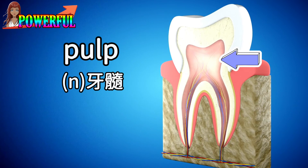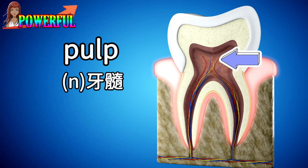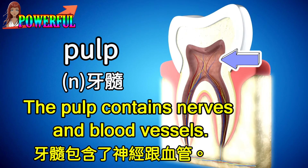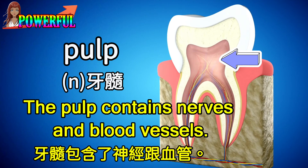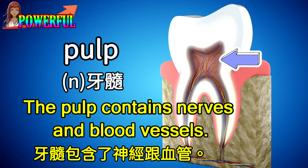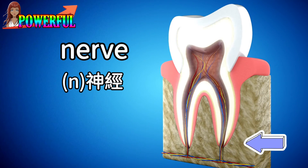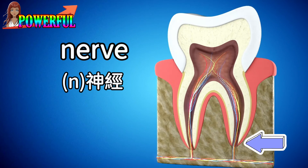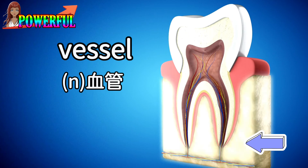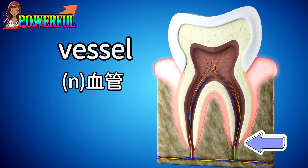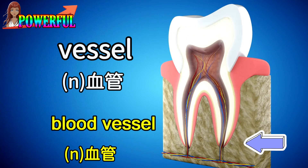Pulp. The pulp contains nerves and blood vessels. Nerve. Vessel. Blood vessel.